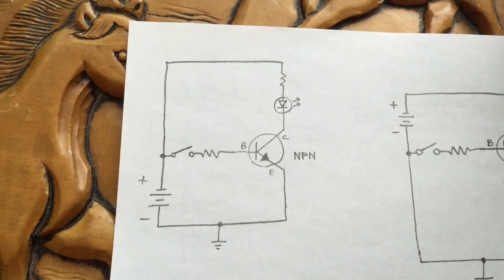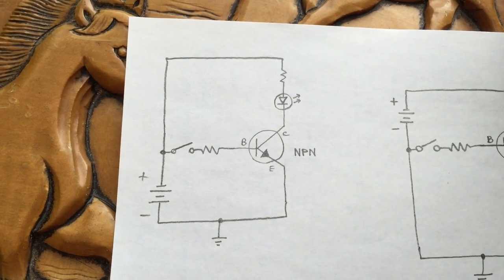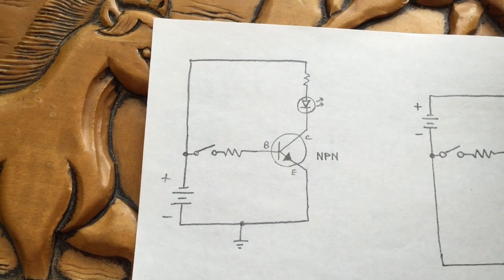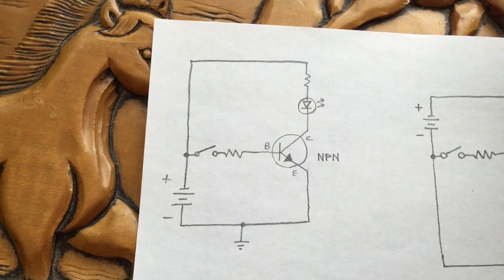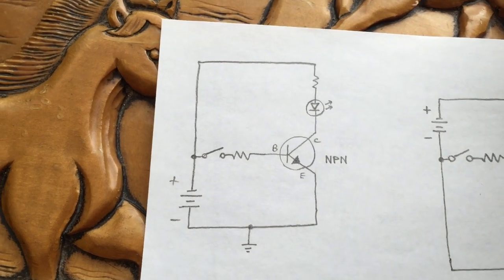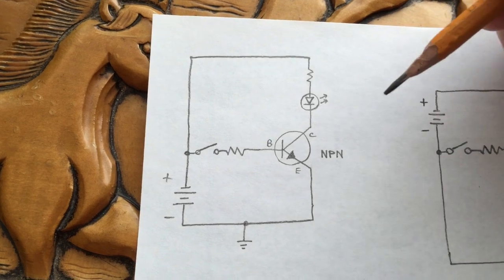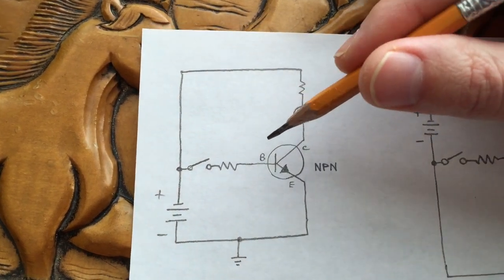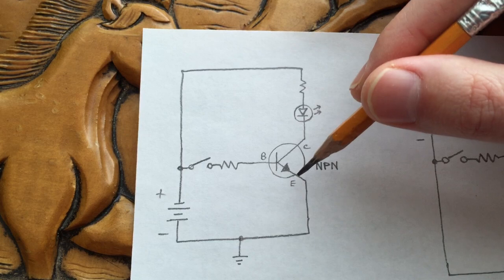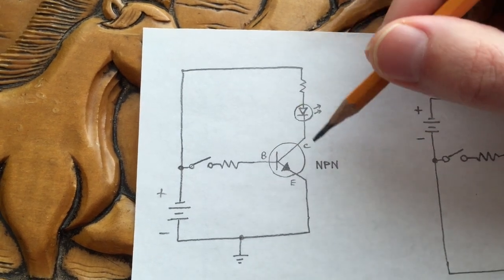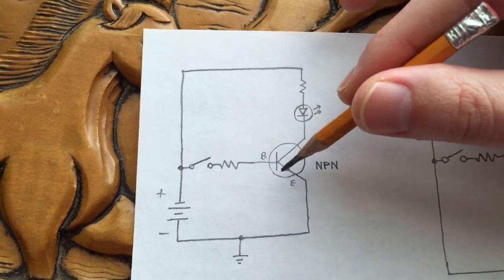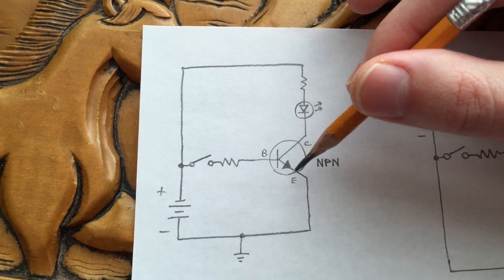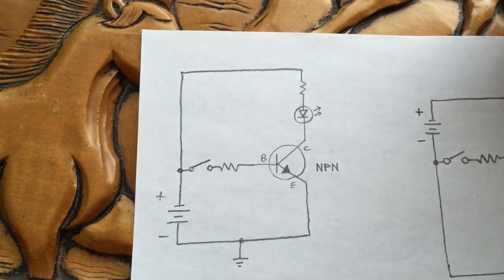This is a little video about bipolar transistors and how to use them as switches, and we're going to talk about the difference between NPN and PNP transistors and how they're used. A transistor has three terminals. A bipolar transistor's terminals are called base, collector, and emitter. This is the symbol for an NPN transistor. For a PNP transistor, the arrow is reversed; otherwise the symbol looks pretty much the same.